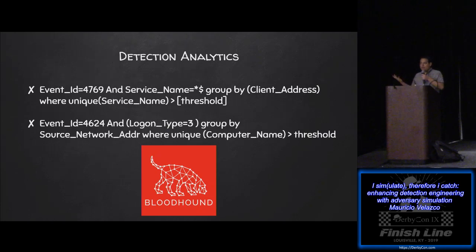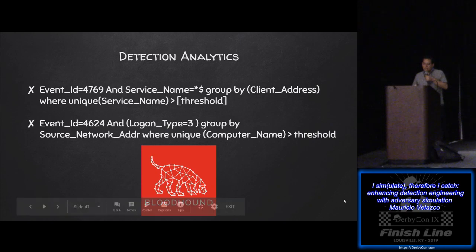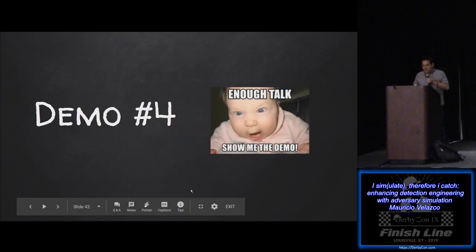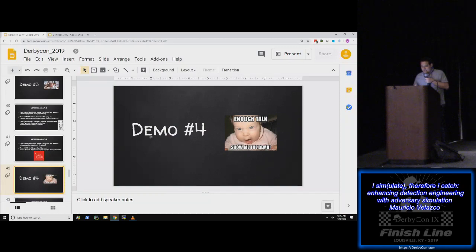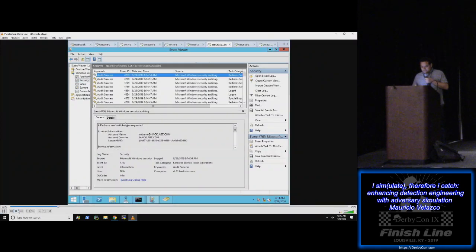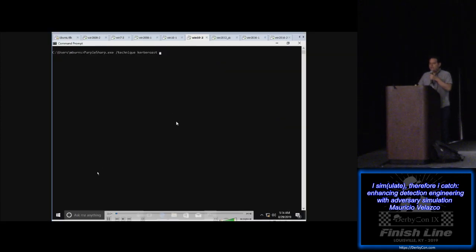One thing I like is that this is really similar to how Bloodhound works — it connects and makes API calls to all hosts in the environment. When Bloodhound runs, it also generates 4769 service tickets for all domain hosts and then connects to each one. So with these two events, 4769 and 5140, this is how we catch Bloodhound, at least on default parameters.